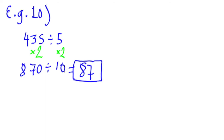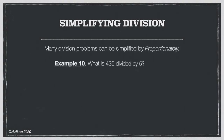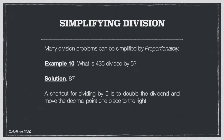So that's the power of Proportionately — we knew this at the back of our minds, but Vedic Maths gives it a name and a process. The shortcut for dividing by 5: double the dividend and move the decimal point one place to the left. The answer to 435 divided by 5 is 87.